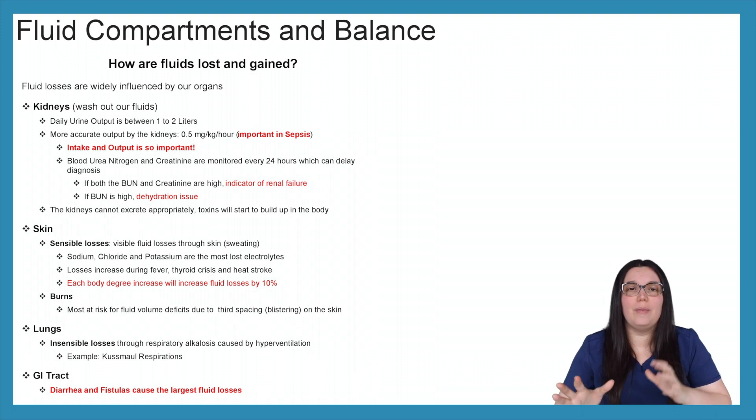A more accurate output by the kidneys is 0.5 milligrams per kilogram per hour. And this is never more important than when we're looking at different disease processes such as sepsis. So in sepsis, we're having major shifting of fluid in areas that it doesn't belong. And one of the key organs that take a hit in early sepsis are our kidneys. So we start to see a decrease in urinary output. And that's why it's so important that you monitor those intake and outputs because that being one of our first key indicators in sepsis will help us catch something way before any lab is going to catch any kind of disease processes.